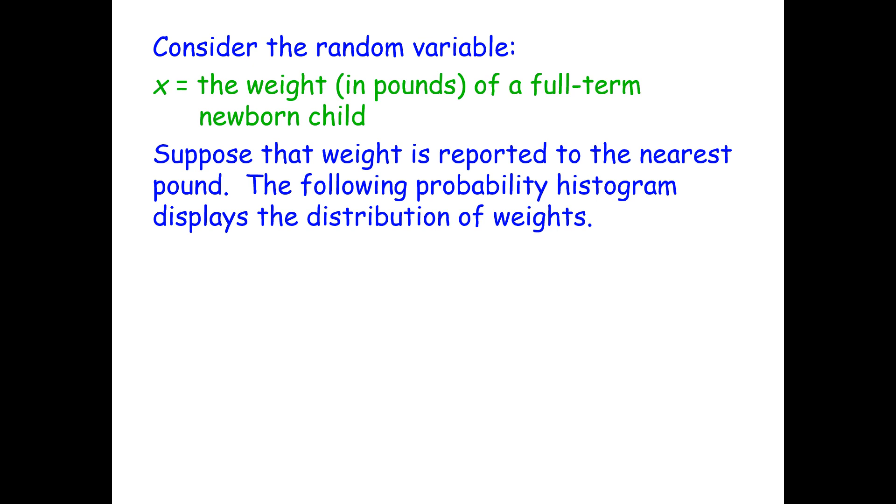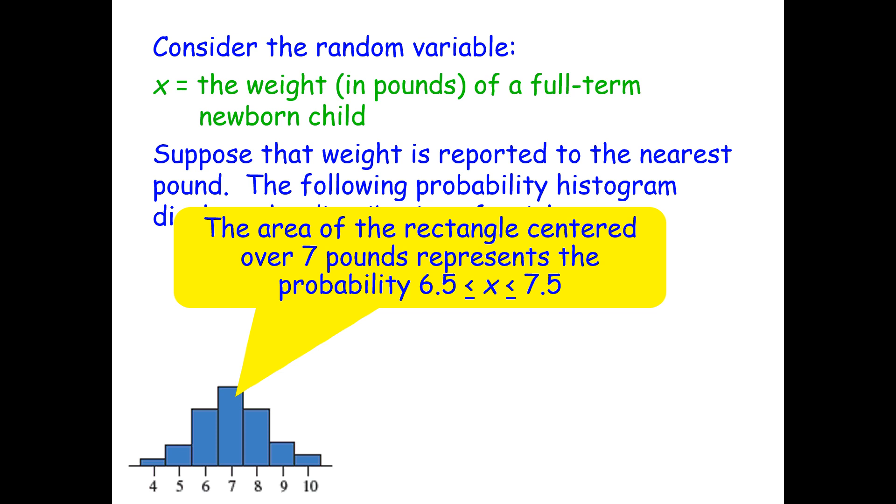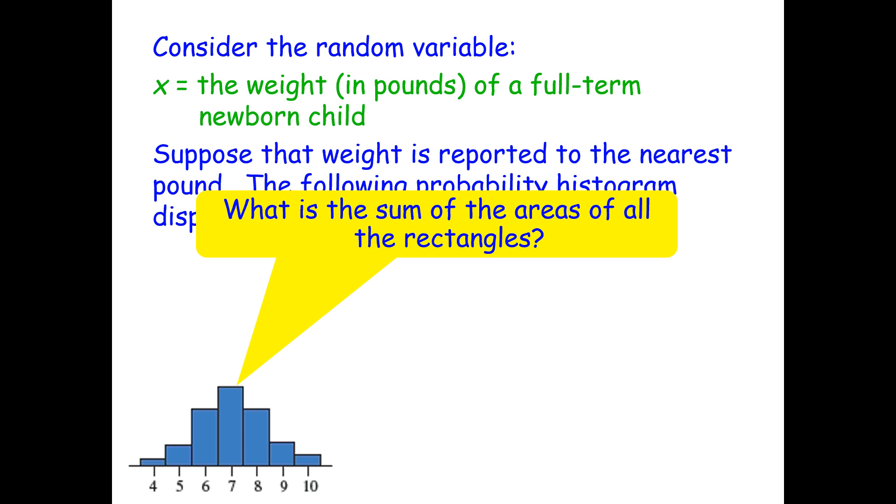Now suppose the weight is reported to the nearest pound. So the following probability histogram displays the distribution of the weights. The area of the rectangle centered over 7 pounds represents the probability that that weight is between 6.5 and 7.5 pounds. What is the sum of the areas of all of the rectangles? It should be 1.